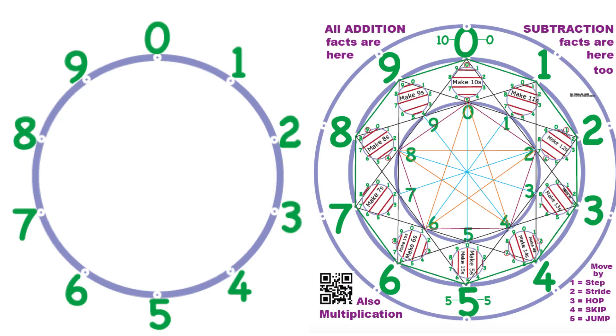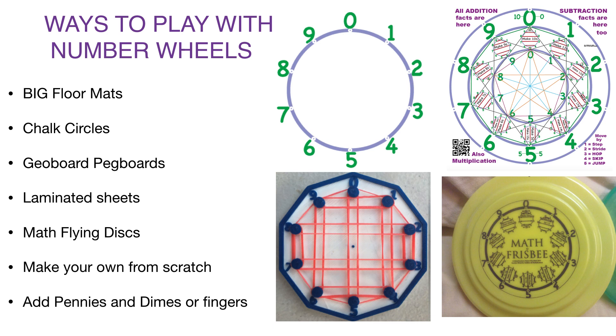A simple number wheel is on the left. The beautiful facts number wheel is on the right, full of patterns containing the addition and subtraction facts and all multiplication patterns. You can get a two-sided laminate with both of these wheels. On the bottom is the geoboard and the math frisbee.